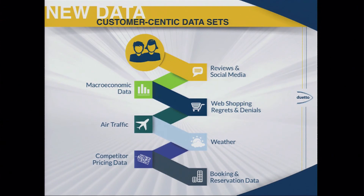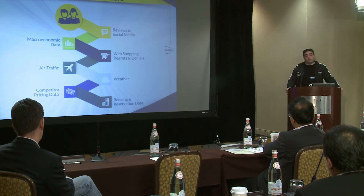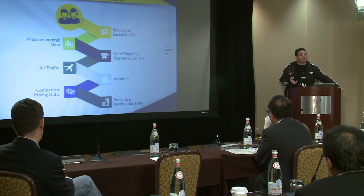Another big one that I've never seen really captured well until I joined Duetto is web shopping regrets and denials. Everybody gets very concerned about data from transactional systems — who books, when they book, and how much they pay. But in statistics, if you really want to build a solid model, you need to look at the people that actually didn't book. You need to understand their behavior and why they did not book and what they were looking to purchase — something Amazon and other retail websites have done really well but where the hotel industry has been lagging.